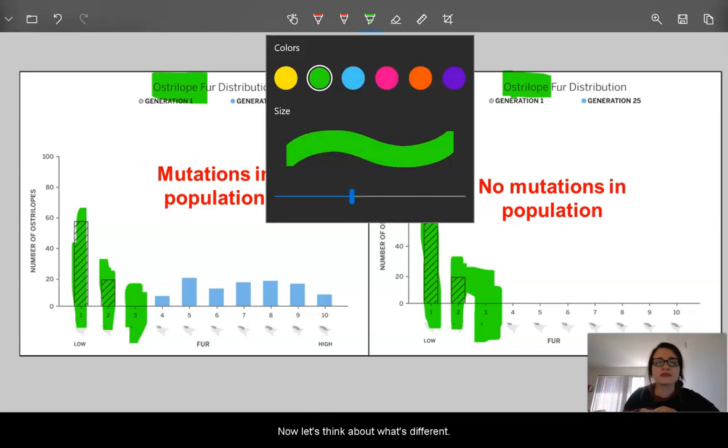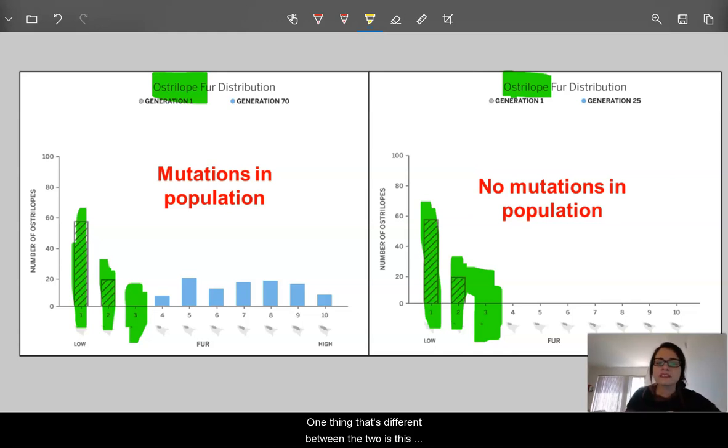Now let's think about what's different. One thing that's different between the two is this population with no mutations turned on only survived 25 generations before they died out, whereas the one that has mutations survived for 70 generations.